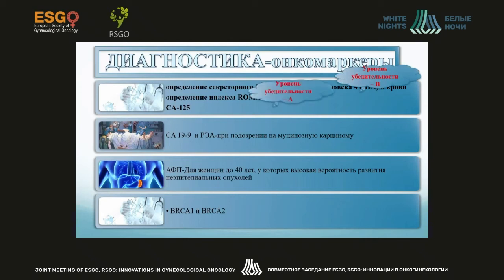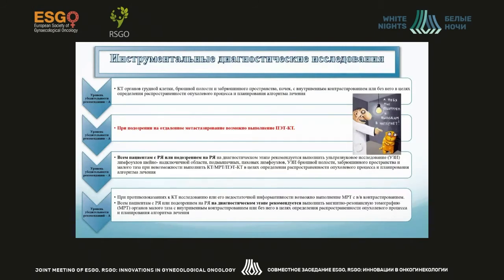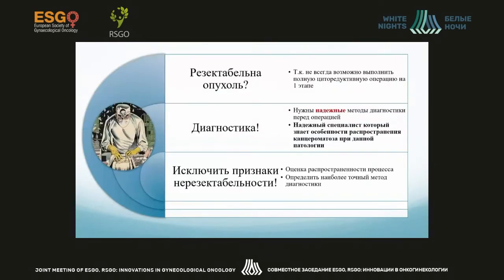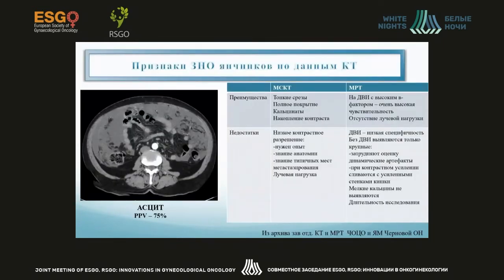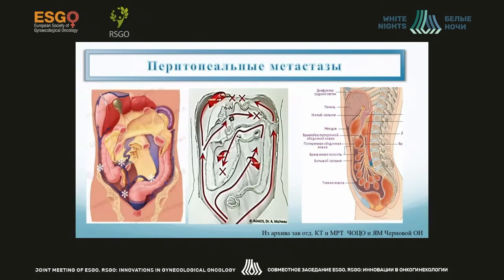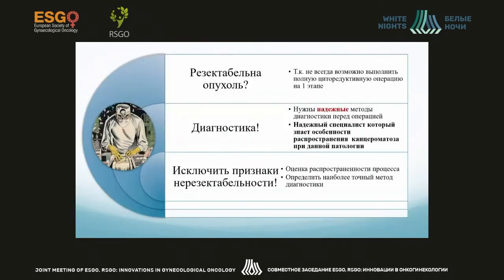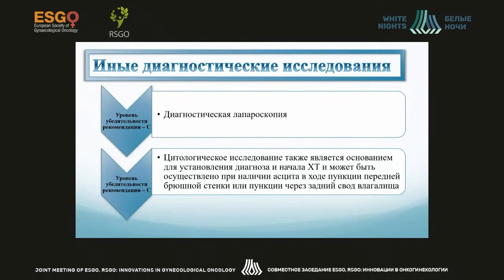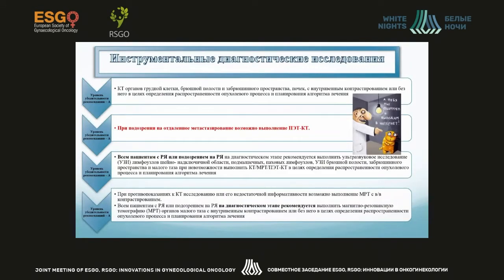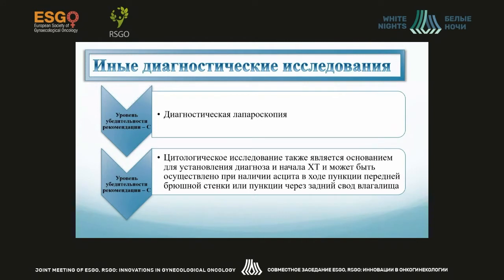The oncomarkers are very important. It is very important to understand the ROMA Index and where these markers stand for different age groups of patients, and we should not forget about mutations. As for instrumental methods of examination, we have computer tomography, and when there is strong suspicion of a disseminated process, PET is used. The level of evidence is quite high when we use these methods.